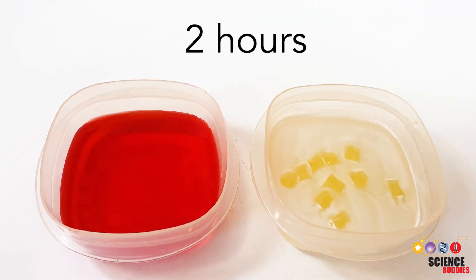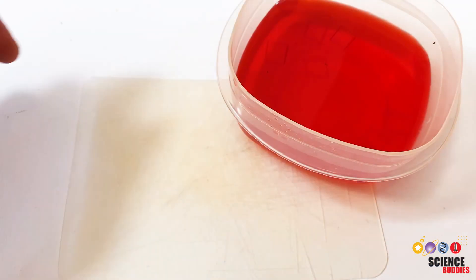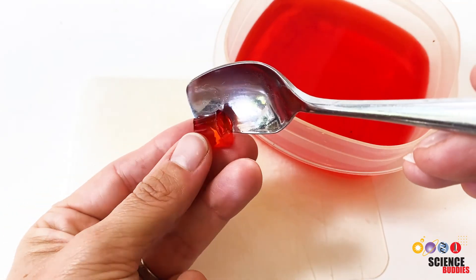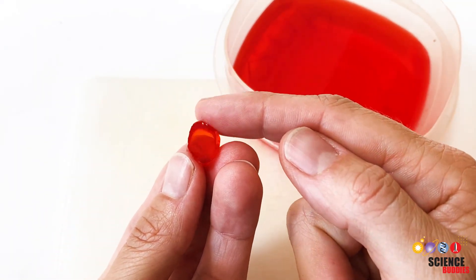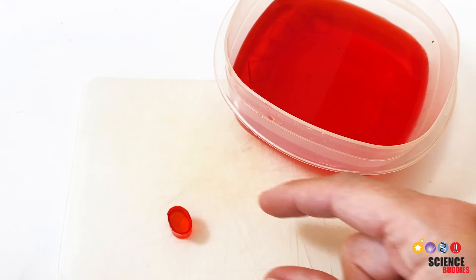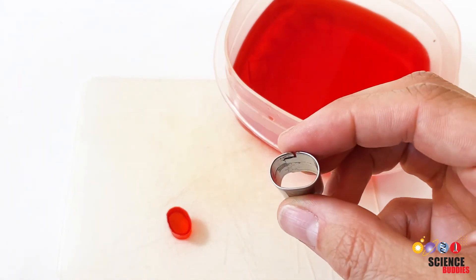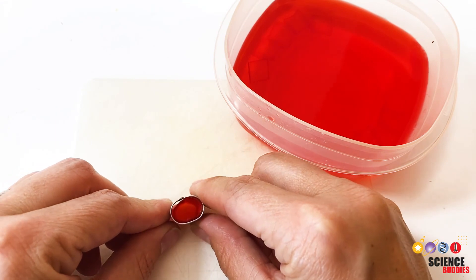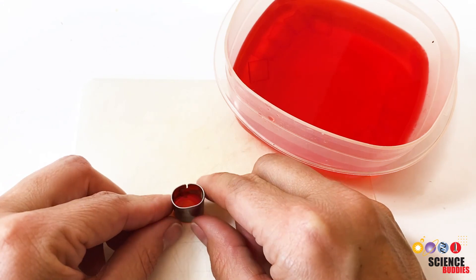Let the jello shapes sit in the two solutions for two hours. Then use a spoon to carefully take the jello shapes out of the solutions one by one. Look at the jello shapes and carefully touch them to see and feel how they have changed. You can also put the shapes back into the original cookie cutter to measure their sizes. Don't forget to take pictures of the jello shapes and write down your observations.